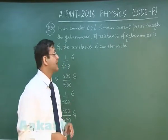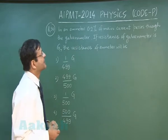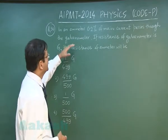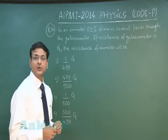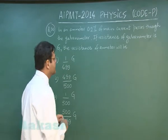Now in the next question, that is question 30, it says: in an ammeter 0.2 percent of main current passes through the galvanometer. That means it is a question in which galvanometer has been converted into an ammeter. The resistance of galvanometer has been given to be equal to capital G.